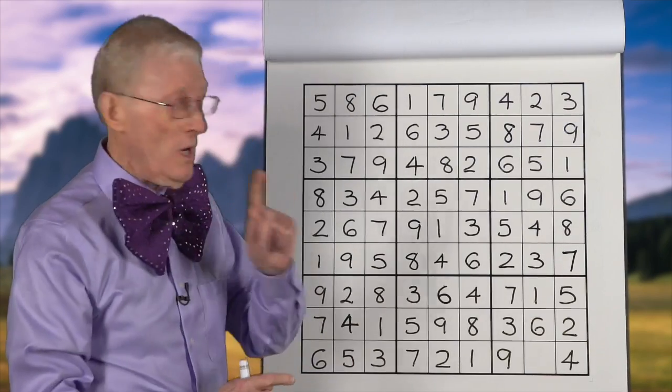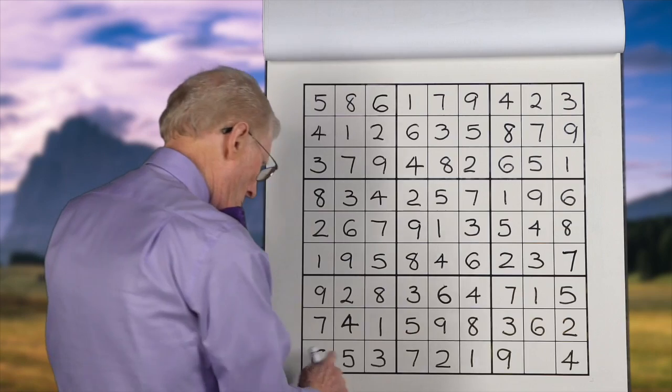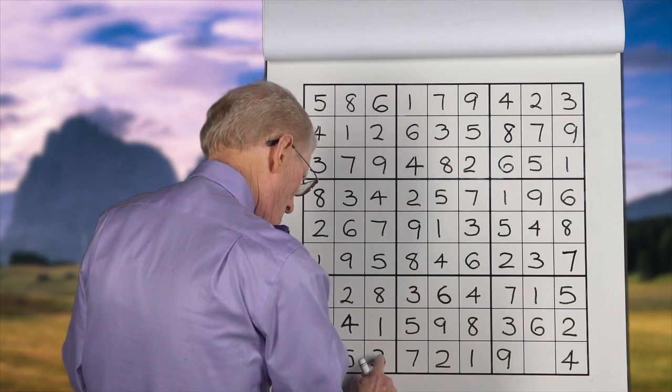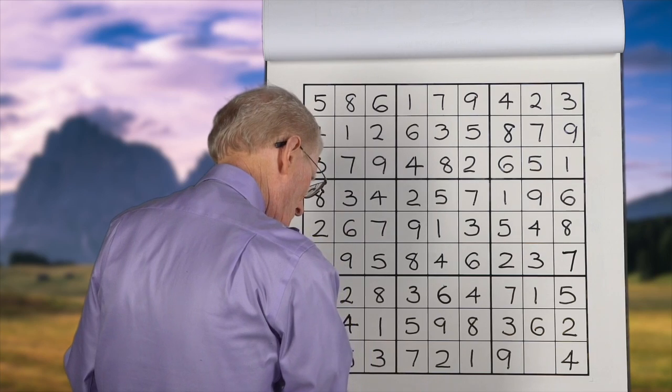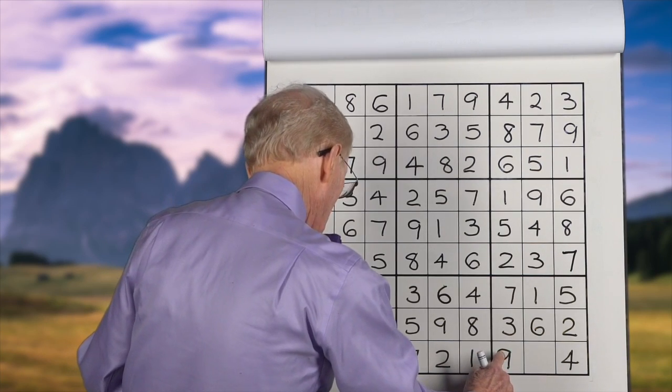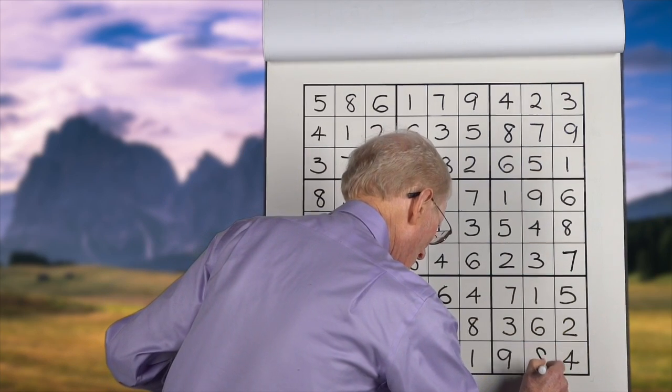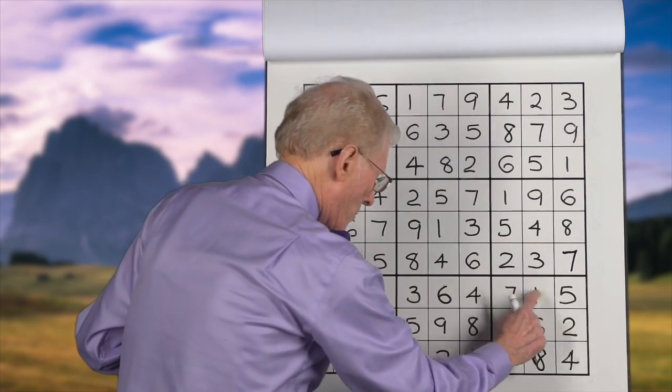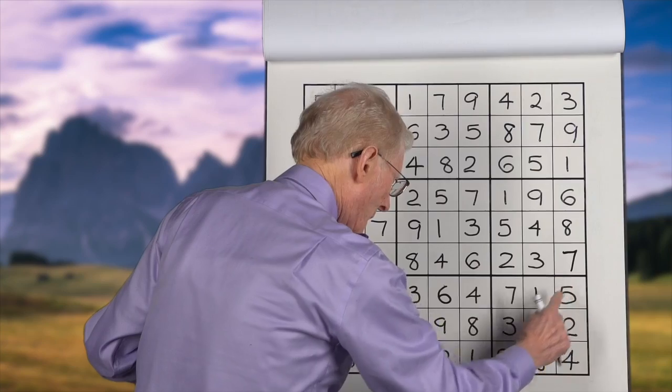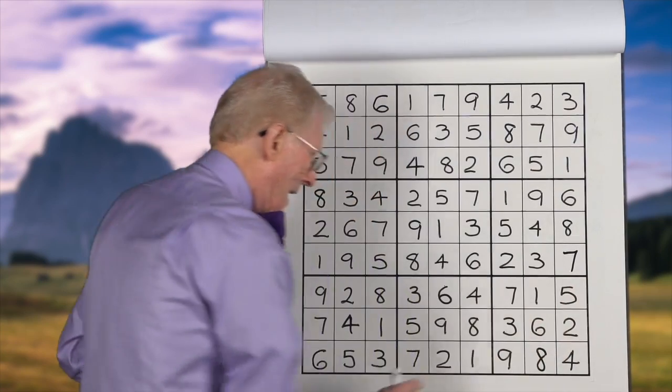And we have one row left. Let's go 1, 2, 3, 4, 5, 6, 7. It's an 8. Correct. Now, we double-check, self-check by going 1, 2, 3, 4, 5, 6, 7, 8, 9. And that's it.